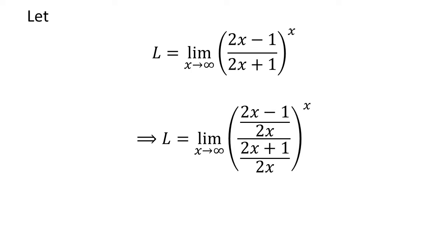As multiplying the numerator and the denominator of a fraction by a common factor does not change the value of the fraction, so let us multiply the numerator and the denominator by 1 upon 2 times x.